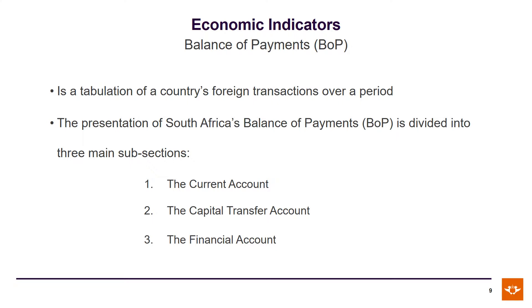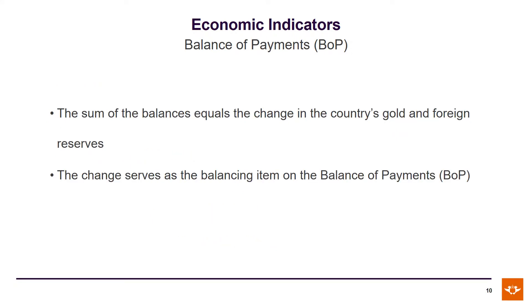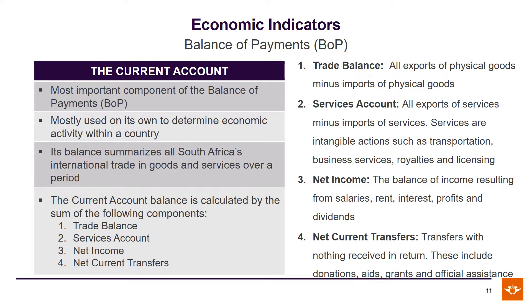Now we're looking at the balance of payments, which is a tabulation of a country's foreign transactions over a period. In South Africa, the balance of payments is divided into three main subsections: the current account, the capital transfer account, and the financial account. The sum of the balances equals the change in the country's gold and foreign reserves, and the change serves as the balancing item. The most important component is the current account, used to determine economic activity within a country. Its balance summarizes all South Africa's international trades in goods and services over a period.